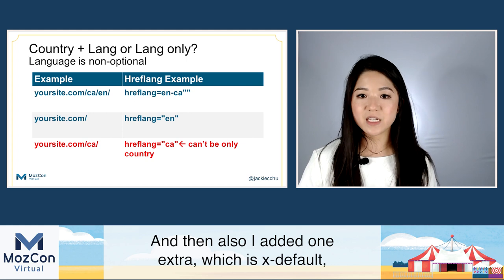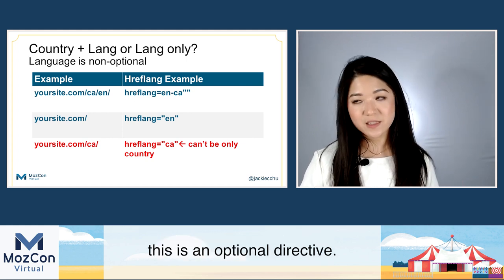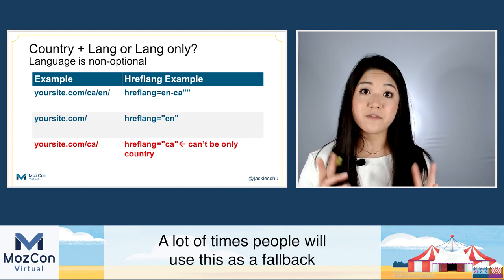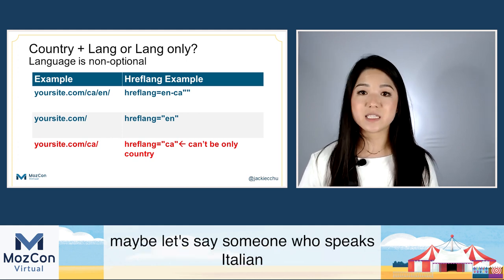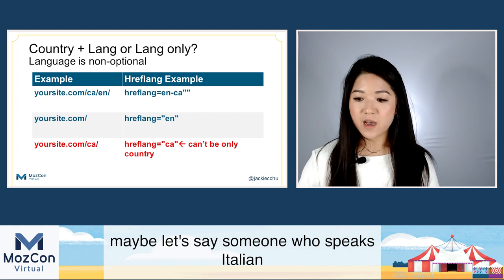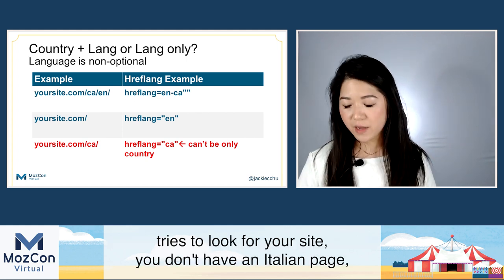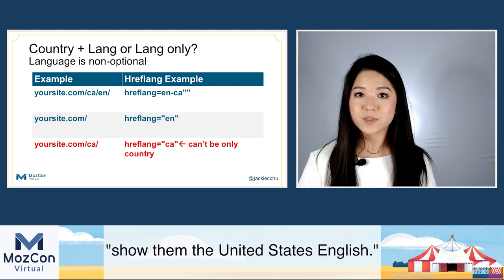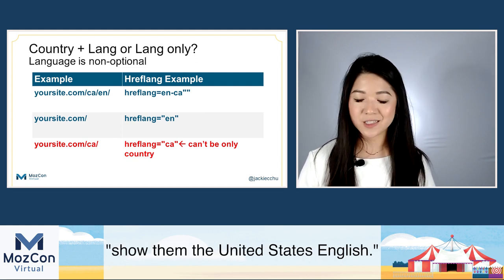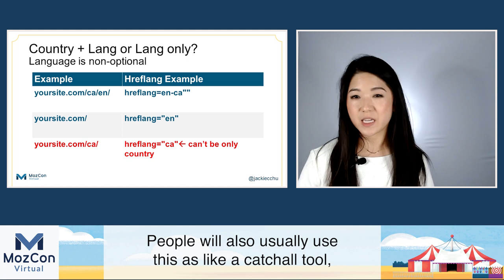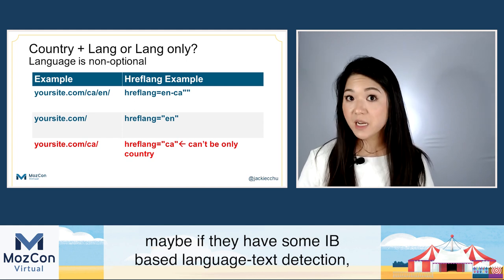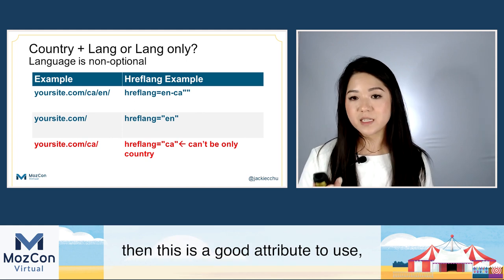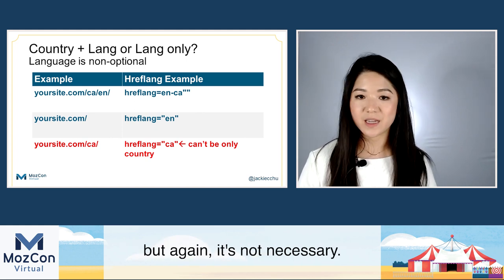I also have a duplicate of this page for the United States — US/EN — and you can see the HTML attribute has changed to EN-US. I also added x-default, which is an optional directive. A lot of times people use this as a fallback — for example, if someone who speaks Italian tries to find your site and you don't have an Italian page, you're telling Google to show them the United States English version. It's also used as a catch-all with IP-based language detection.